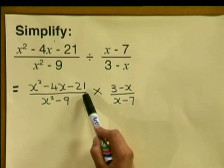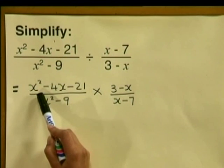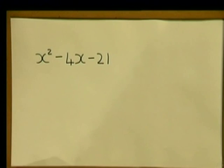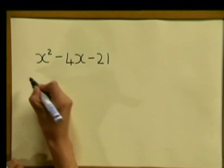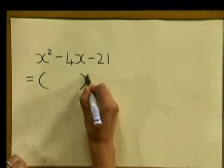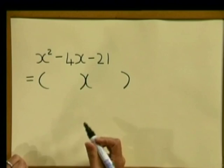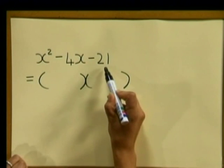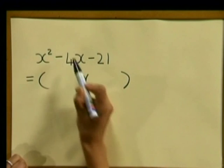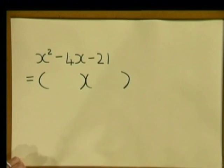Now let's see what else we can do to simplify further. Look at this numerator — do you recognize what this is? Yes, it's a trinomial. It is a quadratic trinomial because the highest power has an X squared in it. We know how to factorize this, so let's factorize it. Here is our trinomial. We write down our two brackets. What we are looking for is two numbers that multiply together to give us minus 21 and add up to give us minus 4.